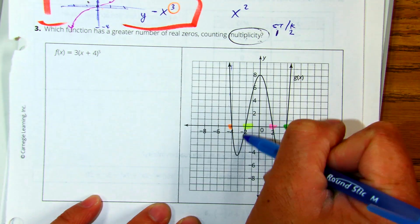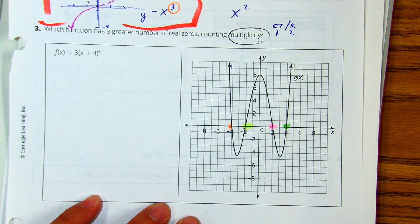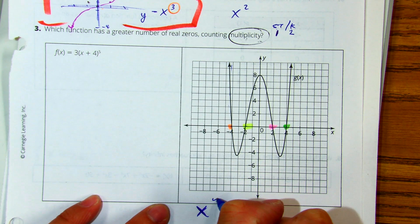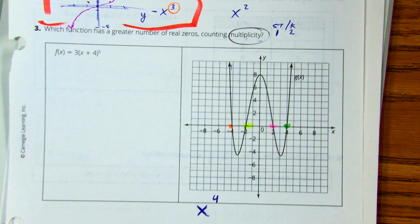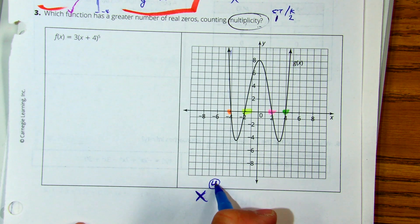this is a one, this is a one, so this is one zero plus one zero plus one zero plus one zero that gives you what? Four zeros. Four real zeros so I know I have a fourth degree polynomial. The degree of the polynomial tells you how many zeros there are.